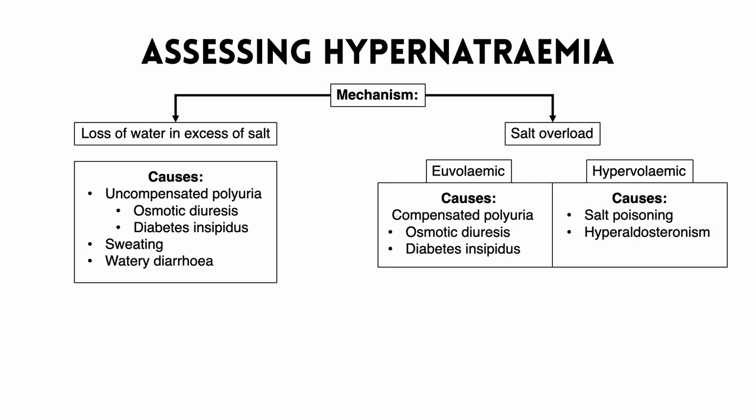The other causes of hypernatremia are due to salt overload. These are much less common. Let's think about them in terms of euvolemia and hypervolemia. The euvolemic causes are simply the causes that we spoke about earlier, but in this case we've got compensated polyuria — the same causes as earlier, but the patient has been able to effectively replace the amount of water they have lost, so they're actually euvolemic. The other causes which are distinct are where we have hypervolemic hypernatremia, and in these cases it's due to real salt overload — either having too much salt taken into the body or just not being able to get rid of salt.